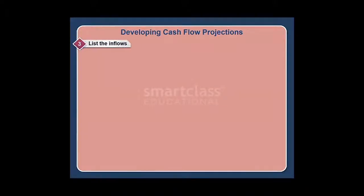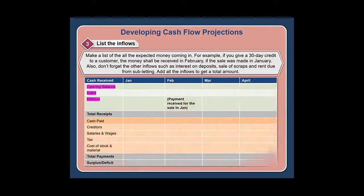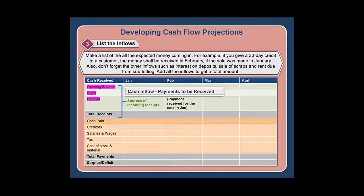Step three: list the inflows. Make a list of all the expected money coming in. For example, if you give a 30-day credit to a customer, the money shall be received in February if the sale was made in January. Also include other inflows such as interest on deposits, sale of scraps, and rent due from subletting. Add all the inflows to get a total amount.